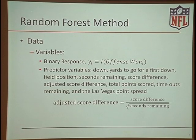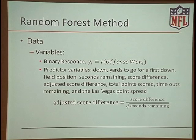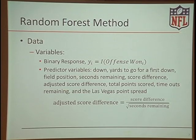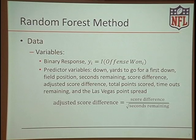We have a binary response variable — an indicator of whether the offensive team won. The predictive variables include: down, yards to go for the first down, field position, seconds remaining, score difference, an adjusted score difference (score difference adjusted for time remaining), total points scored, timeouts remaining, and the Las Vegas point spread. We ended up using the Vegas point spread as the singular measure of team quality difference. We tried home team, current records, yards gained per game, and similar variables, but none showed importance in the model — the spread essentially accounts for all those things.